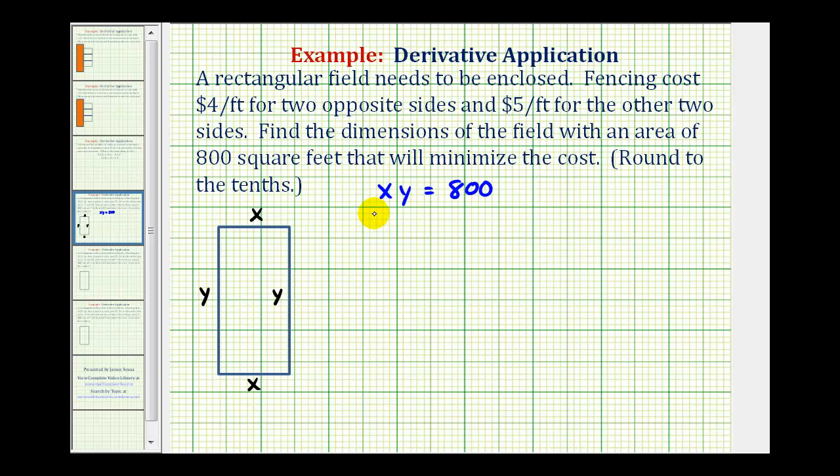So our constraint for this problem is xy equals 800 square feet. This is often called the constraint. Now let's consider the cost of the fence. It costs $4 per foot for two opposite sides and $5 per foot for the other two sides. This often occurs if they factor in the cost of gates for two sides of the enclosure. Let's assume that the shorter sides cost $5 per foot and the longer sides cost $4 per foot.